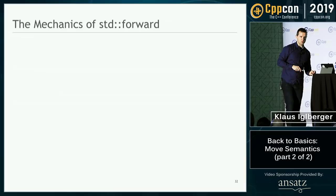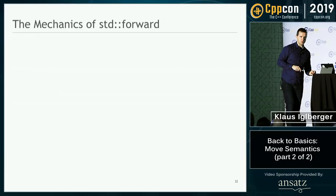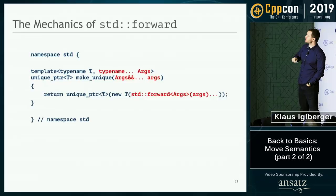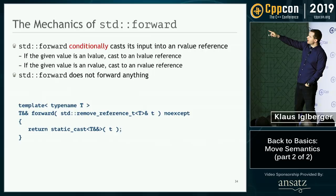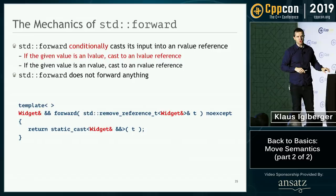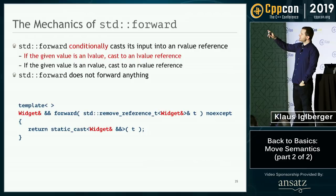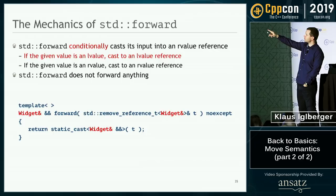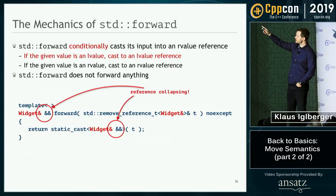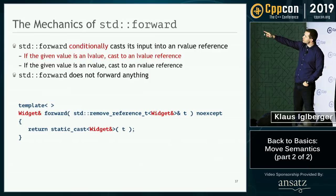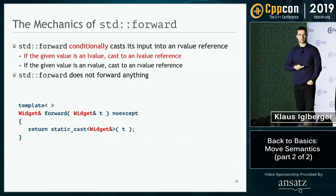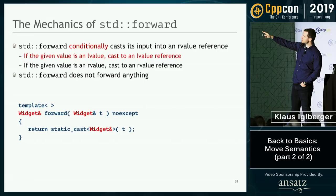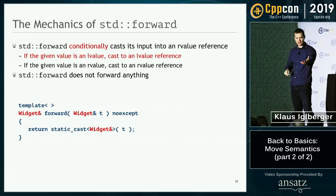Let's take a short look at how std::forward works — it relies on reference collapsing. Assume I pass an l-value widget: T is deduced to widget&. Everywhere T appears we get widget&, and widget& && collapses to widget& — so the return type is widget&, an l-value reference. remove_reference<widget&> resolves to widget, so the function takes a widget and casts to an l-value reference. Passing an l-value gives you back an l-value reference.